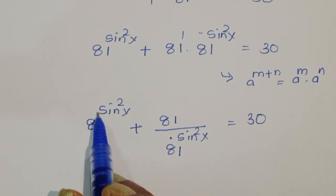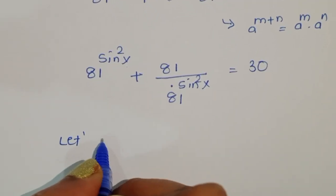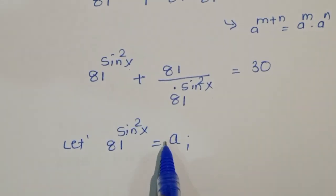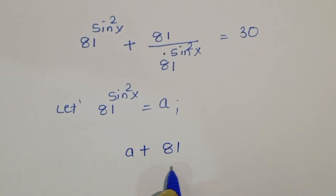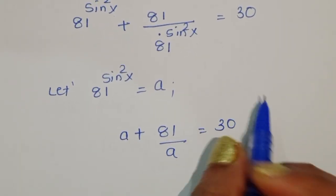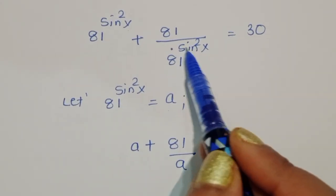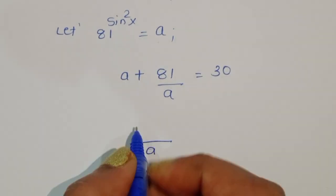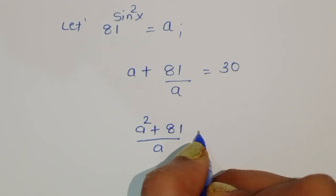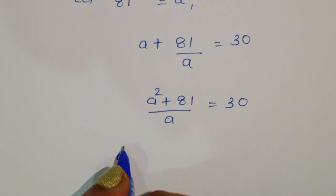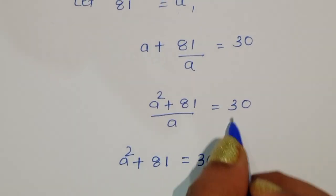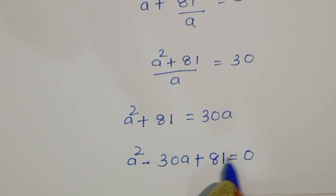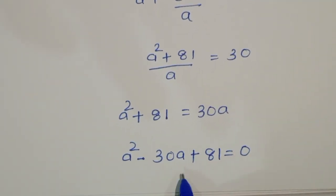Let's consider 81^(sin²x) = a. So we can write a + 81/a = 30. Taking LCM, we get a² + 81 = 30a. Rearranging: a² - 30a + 81 = 0. We got the quadratic equation a² - 30a + 81 = 0, which we now need to solve.